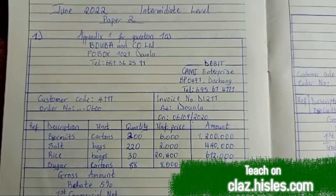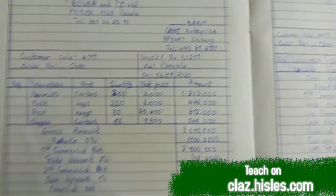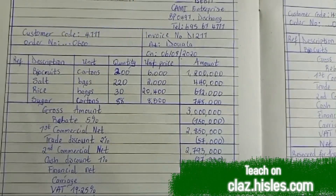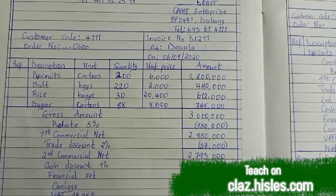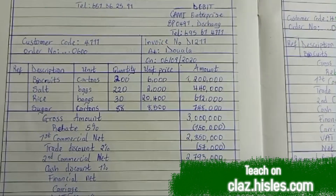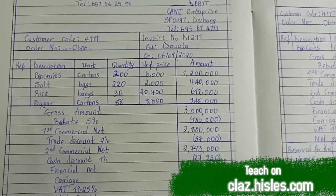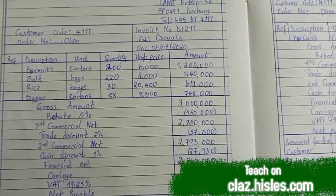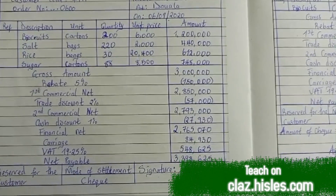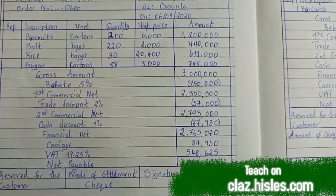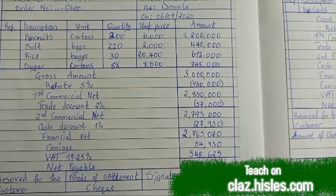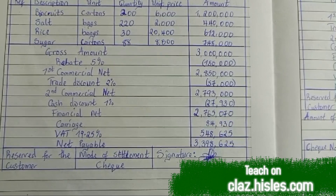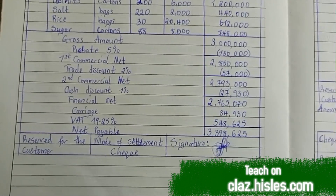We had everything filled — all the gross amount calculated because we had the goods: biscuits, salts, rice, with their unit prices, quantities, and amounts. The sum of all that made the gross amount, and we took a rebate of five percent of the gross amount, giving us 150,000. The difference gave us the commercial net, and so on until we got the net payable.